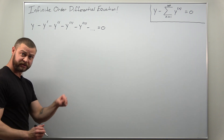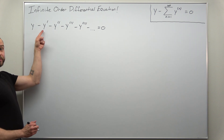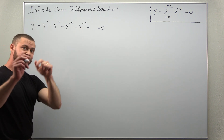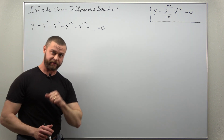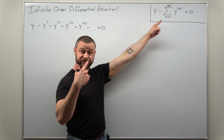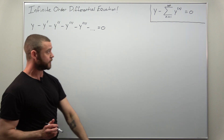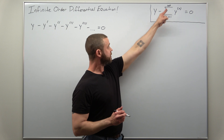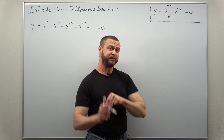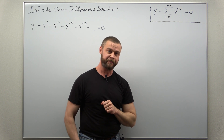Our differential equation starts with the function y, and then we subtract y prime, minus y double prime, and so on forever. If you want, you can rewrite that in summation notation, writing all your derivatives summing from the first derivative onwards. Be careful — that's not an exponent, that's denoting the nth order derivative.